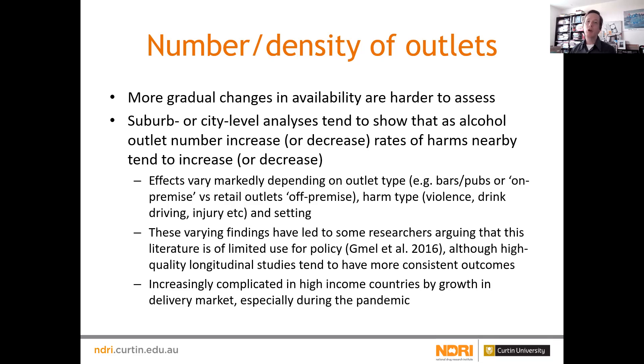The markedly varying findings in the literature have raised questions about how useful this field of research is for policy. But in this review, we found that high-quality studies looking over time with good design tend to have fairly consistent findings — generally pointing to the fact that neighbourhoods that increase availability tend to increase their harms, especially from retail outlets and drinking-oriented venues like bars and pubs rather than restaurants and cafes. This whole area becomes more complex as we see a growing market for home delivery, which is really an area where there's not a lot of research.